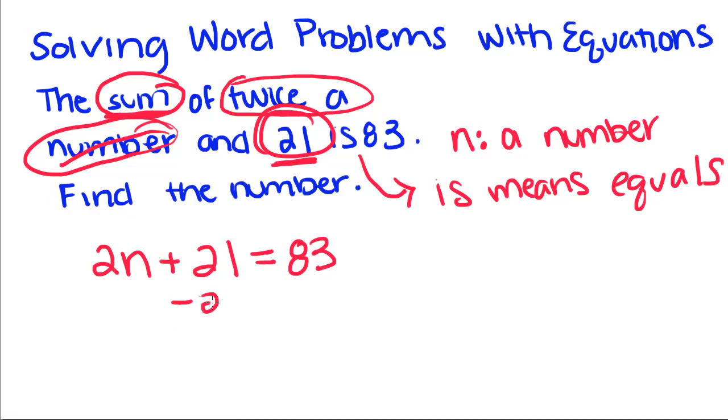We're going to subtract 21 from both sides. You get 2n is equal to 62. Divide by 2, and n is equal to 31. Now the tricky thing about word problems is you always have to make sure you solve the equation correctly and answer the problem. This one just tells us to find the number.